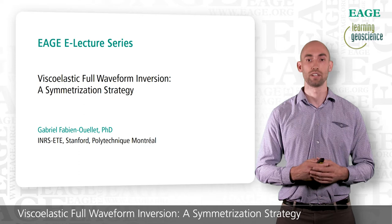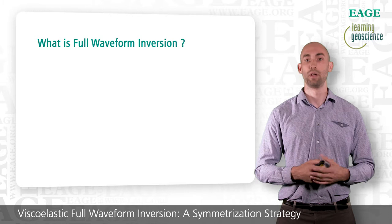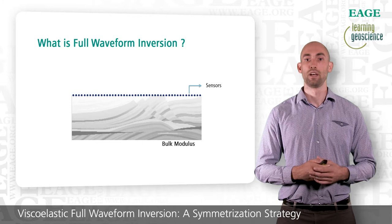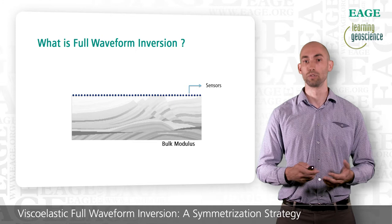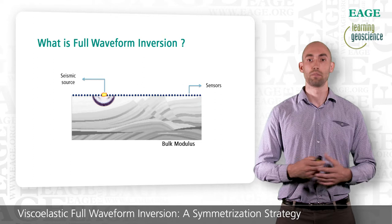What is full waveform inversion? Let's say we want to recover the structure of some mechanical properties of the Earth, for example the density, the bulk modulus, or the shear modulus. To image the Earth, we place sensors that record the ground motion on the surface, introduce a mechanical wave at some point — for example with an explosion — and a wave propagates in the subsurface and is recorded at the sensor locations. Full waveform inversion is the process of recovering these properties given the records of this propagated wave field.